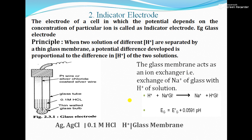The principle of the glass electrode is: when two solutions of different H⁺ ion concentrations are separated by a thin glass membrane, a potential difference is developed proportional to the difference in H⁺ ion concentration of the two solutions. In the diagram, a 0.1 M HCl solution is inside the glass electrode, and another HCl solution of different concentration is outside — the two different H⁺ concentrations create a potential difference.